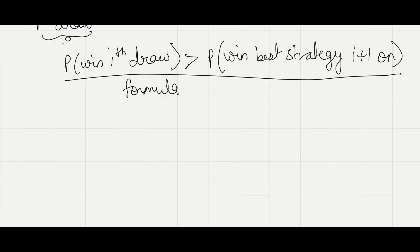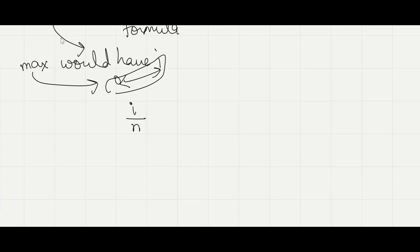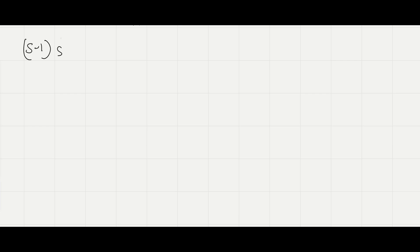Let's start. The probability of winning at the i-th draw means the maximum would have occurred somewhere in draws 0 through i, so the probability of winning is i/n. Now, for the probability of winning with the best strategy: our strategy is to pass s−1 slips and choose the first slip greater than the maximum of those s−1 slips. Suppose these are our n slips and the largest dowry is at the k-th position.